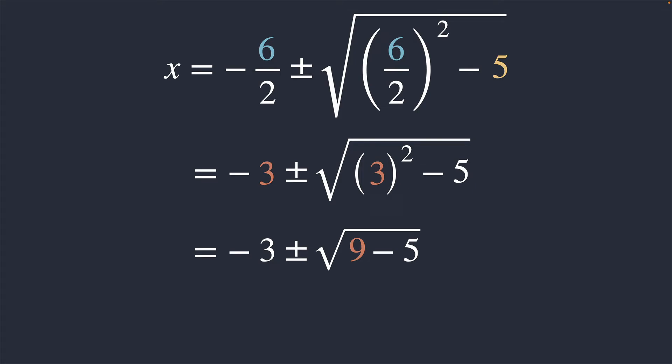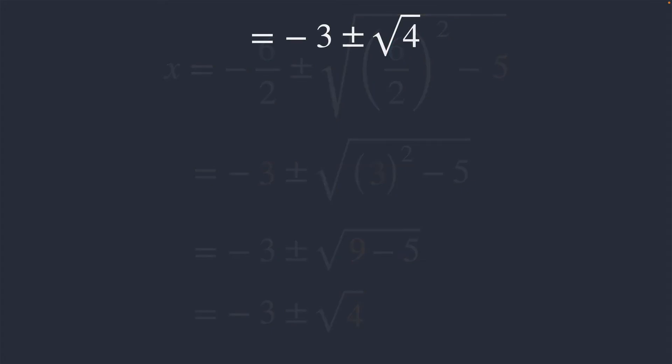9 minus 5 gives us a value of 4. Now, it turns out we can actually evaluate the principal square root of 4 as an integer, which is 2.